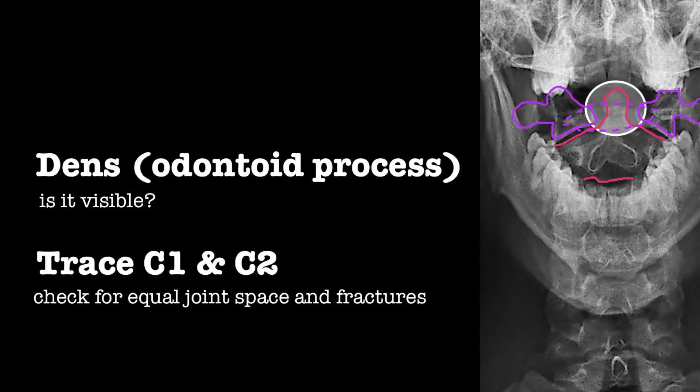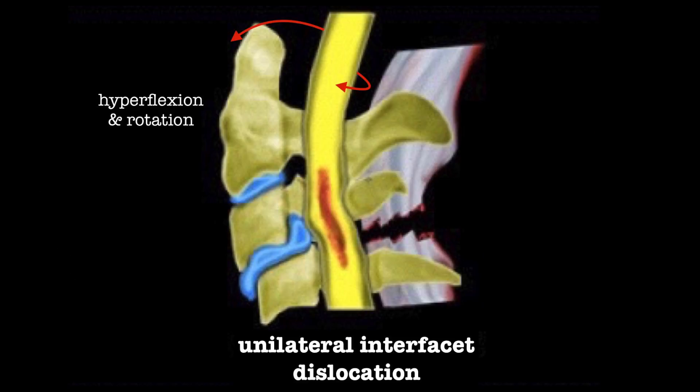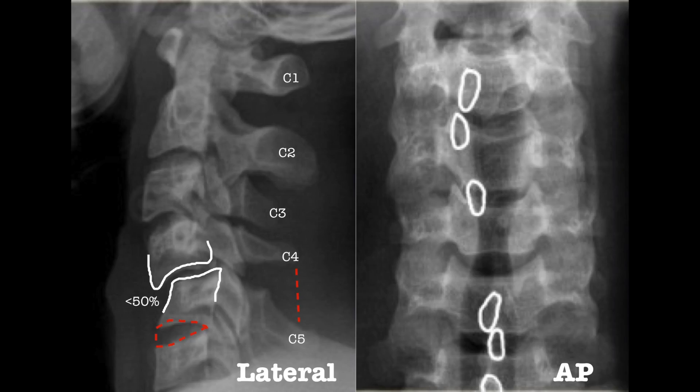Now we'll briefly discuss interfacet dislocation. Unilateral interfacet dislocation is due to hyperflexion and rotation, causing the inferior facet on one side to slide over the superior facet and become locked, causing anterior subluxation of the vertebral body of less than 50%.